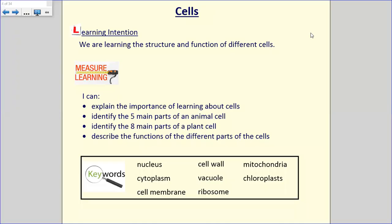This is the main point of the lesson, the main points that we want you to take away. We're looking at the similarities and the differences between plant and animal cells in terms of the structure and the function. Function basically means what the different parts of the cells do, what their job is. By the end of this lesson, you should be able to explain why it's so important that we learn about cells, label the five main parts of an animal cell, label the eight main parts of a plant cell and also tell me what each of those parts does.